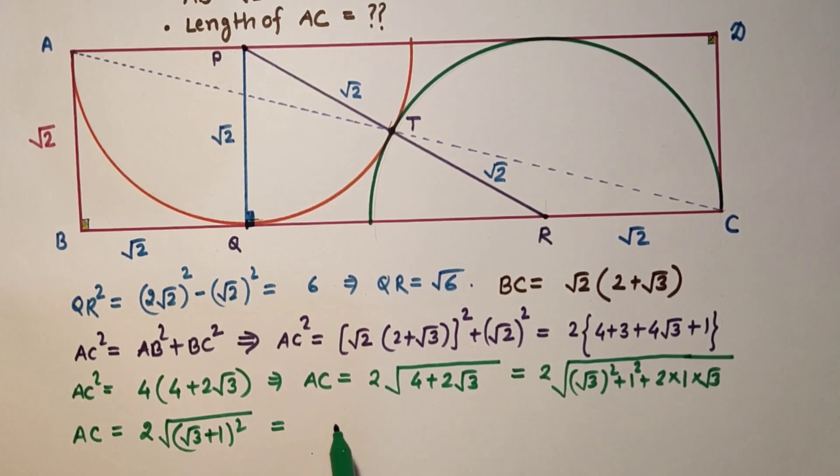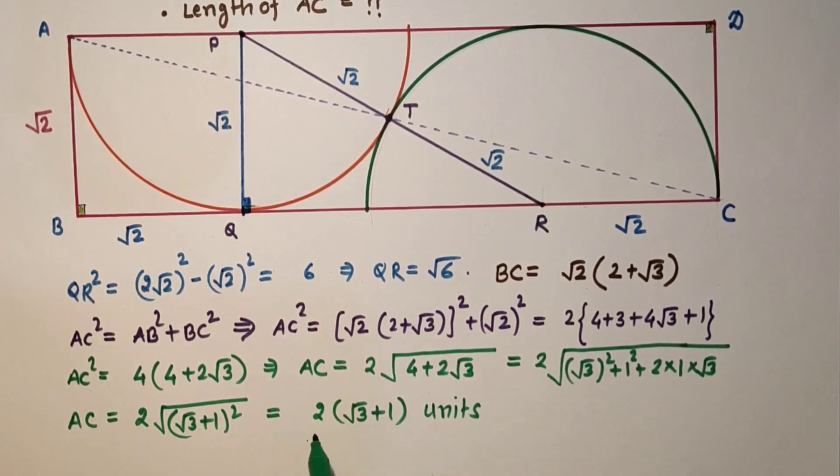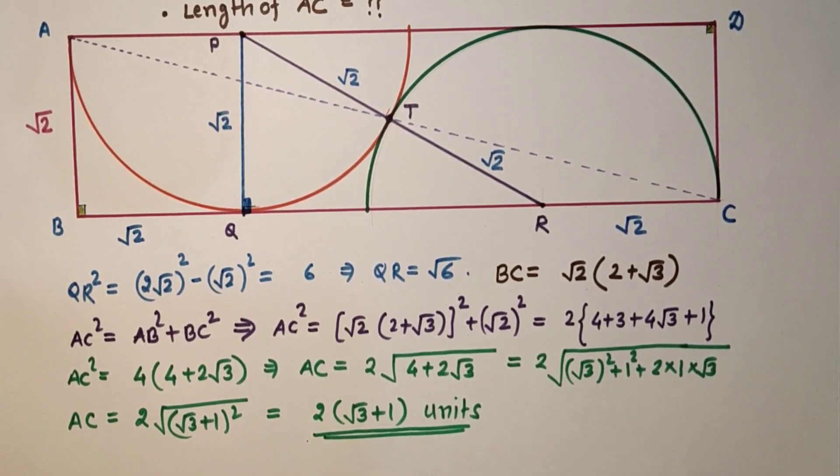And finally it will be 2 times root 3 plus 1 units. And this is the answer. Length of diagonal AC will be 2 times root 3 plus 1.